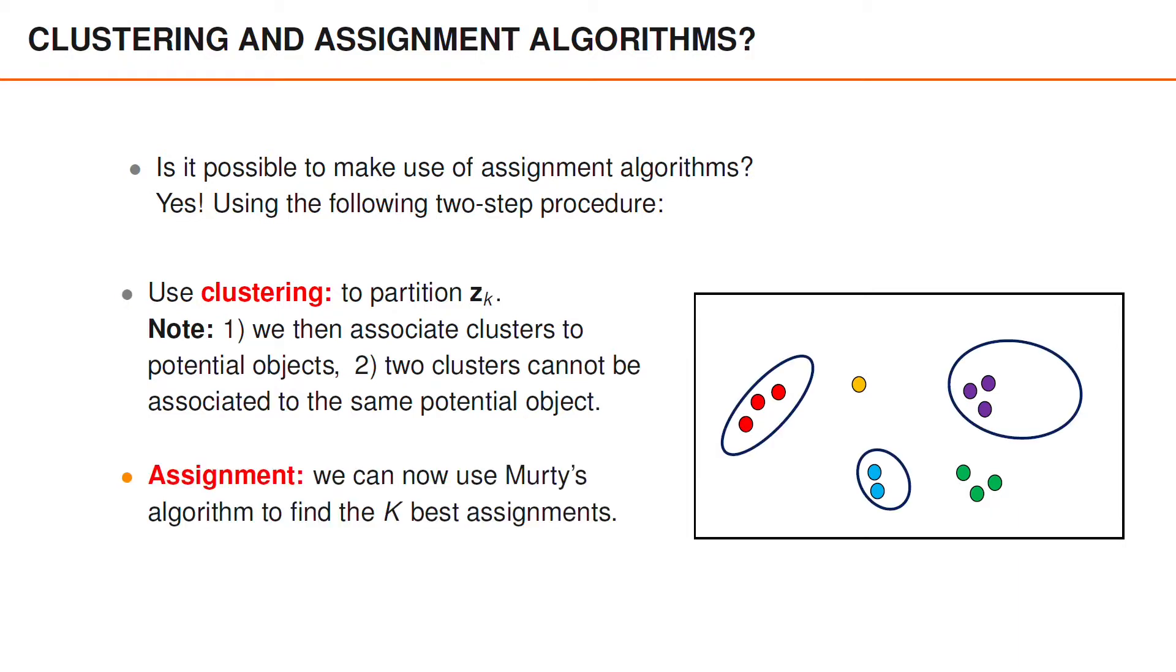This means that we can formulate the problem of finding reasonable associations as an assignment problem of the same type as when we studied point object tracking. For instance, if we want to find the k-best assignments, we can use Murty's algorithm.